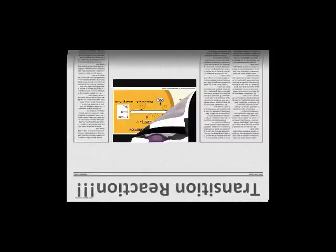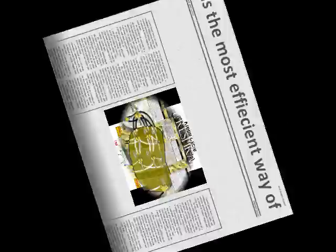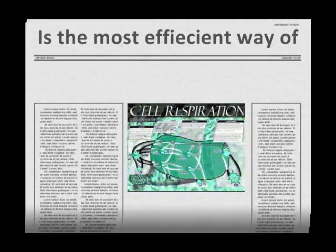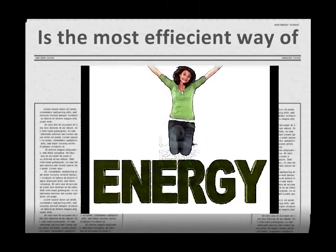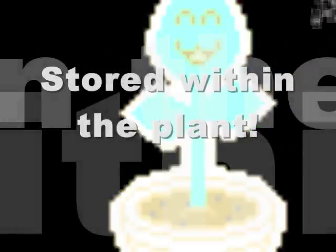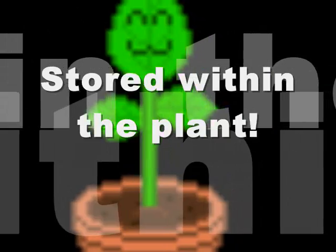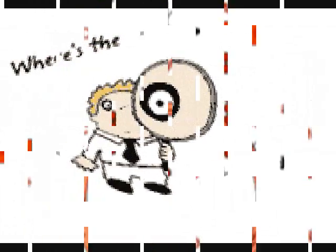For transition reaction, transition reaction, transition reaction — preparing for Krebs cycle. Cellular respiration is the most efficient way of getting energy stored within the plants. After the sugars have undergone the process of Krebs cycle,